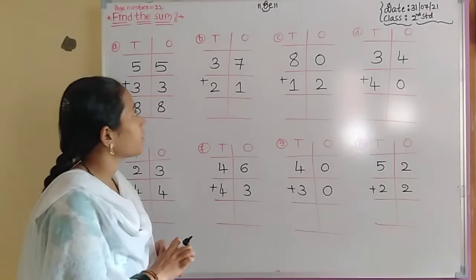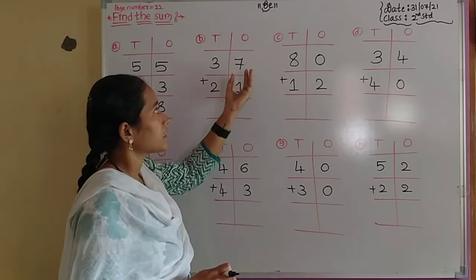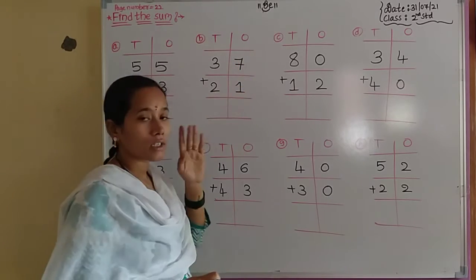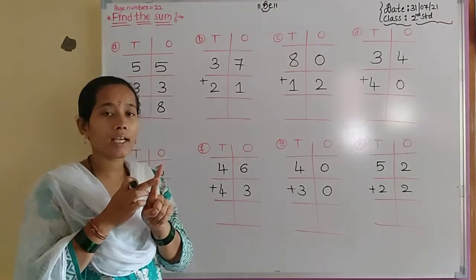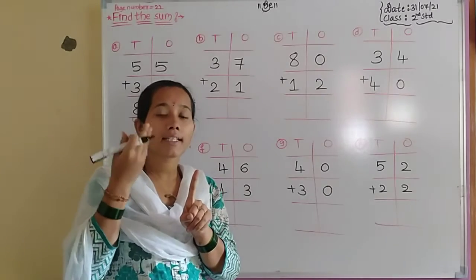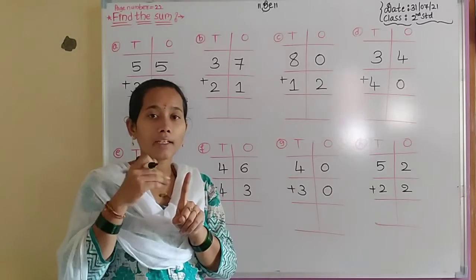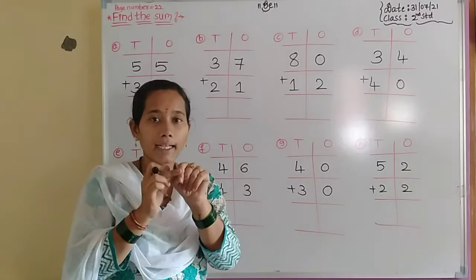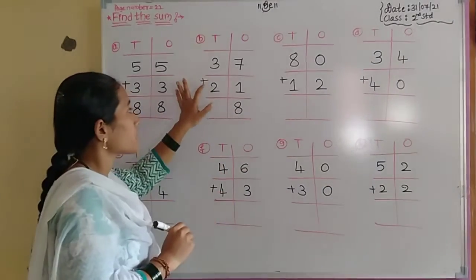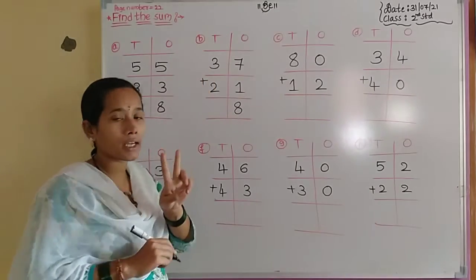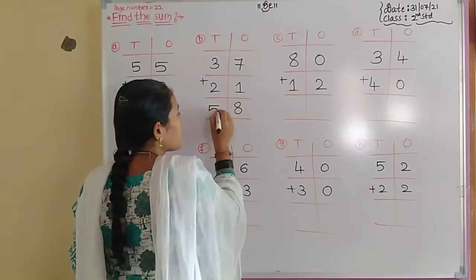The next problem: 37 is the first addend, 21 is the second addend. Add the ones placement first: 7 plus 1. Take 7 in your mind and 1 finger. Count forward after 7: 8. Fingers are over, so 8 is the answer for the ones place. Then tens placement: 3 plus 2. Take 3 in your mind, 2 fingers. After 3: 4, 5. So the answer is 58.